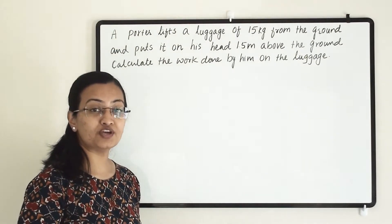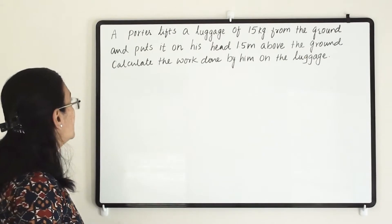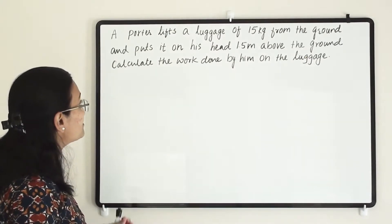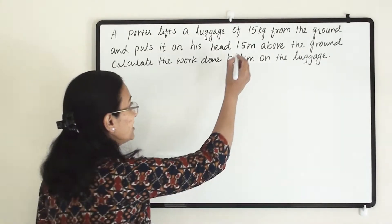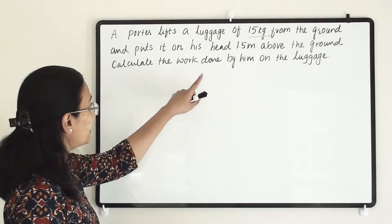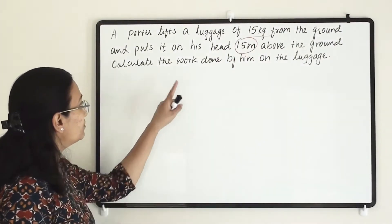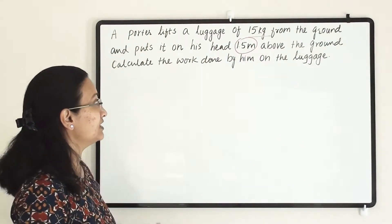Welcome to Learn Yourself. Today we are going to learn and understand solved example 11.2. This says that a potter lifts a luggage of 15 kg from the ground and puts it on his head 1.5 meter above the ground. Calculate the work done by him on the luggage.